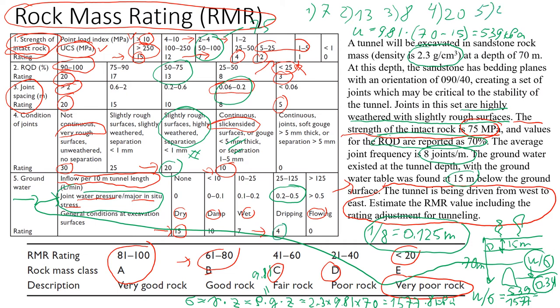A ratio of 0.34 falls in the range from 0.2 to 0.5 in the groundwater table, so the rating will be 4. Now we move to the next slide and also see how we can include the tunnel orientation adjustment.